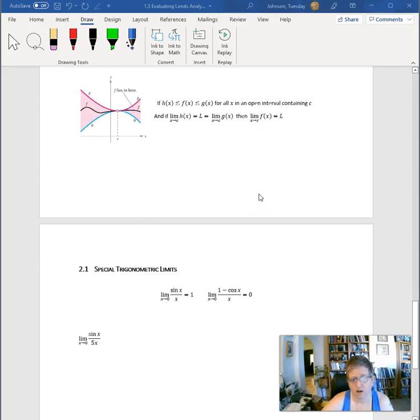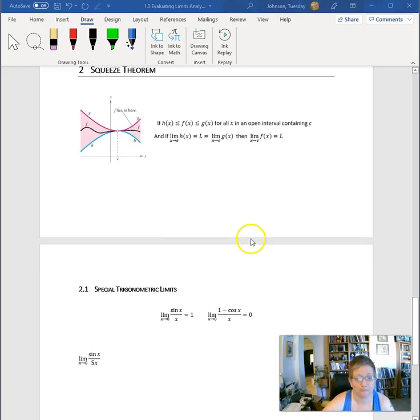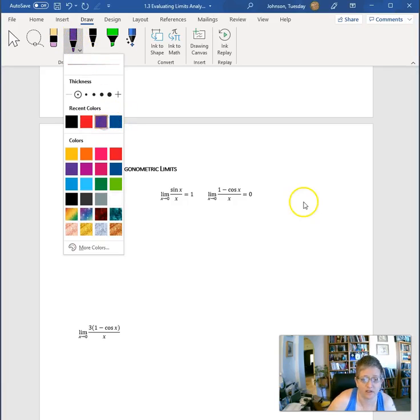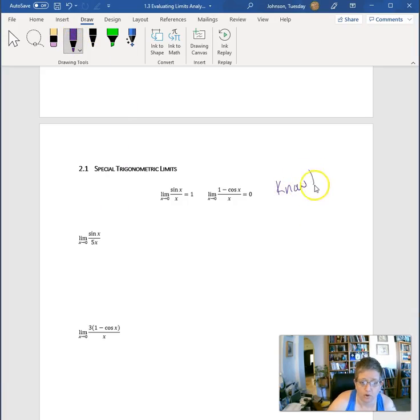If two functions come together and trap in another function, they all have to have the same limit. It's like you made a peanut butter and jelly sandwich trapped in between two pieces of bread. When you bring the bread to your mouth, the peanut butter and jelly comes too. It's a squeeze theorem, also called a sandwich theorem. So we have these two special trig limits. These ones you will want to memorize. Throw them down on a note card.